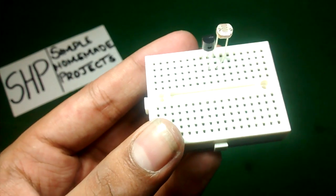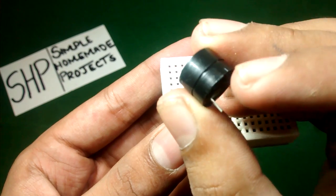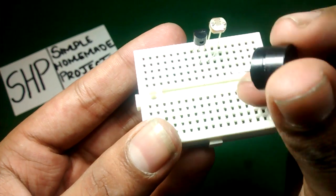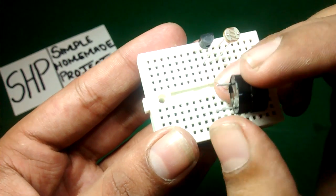Now place the buzzer. The negative terminal of the buzzer, which is the short terminal, you have to connect it to the left pin and the positive to another rail.